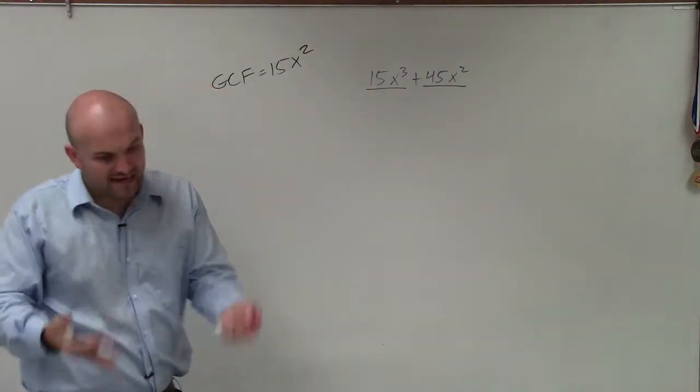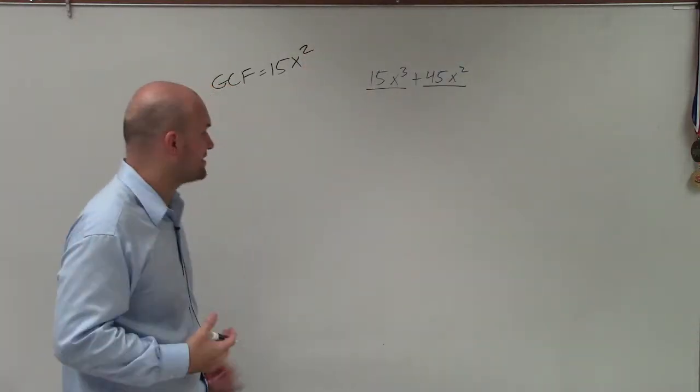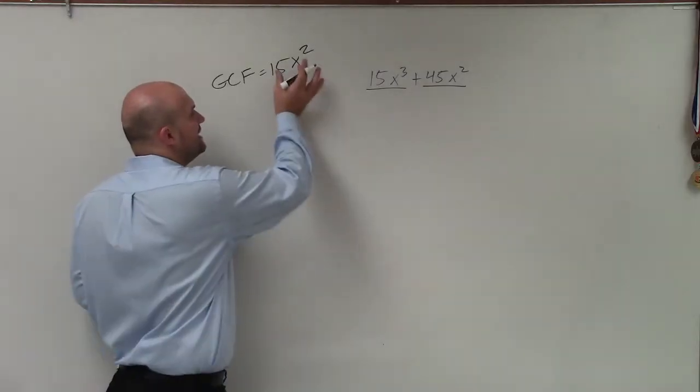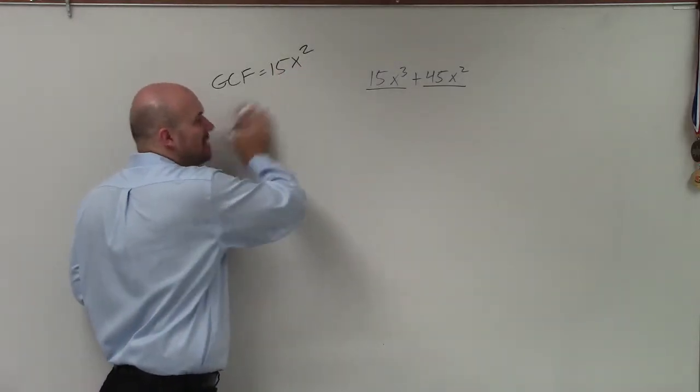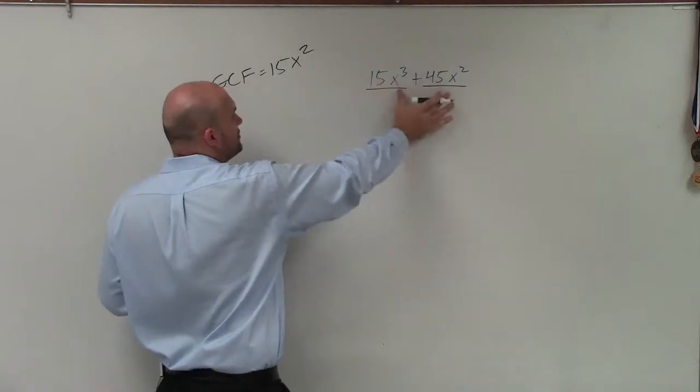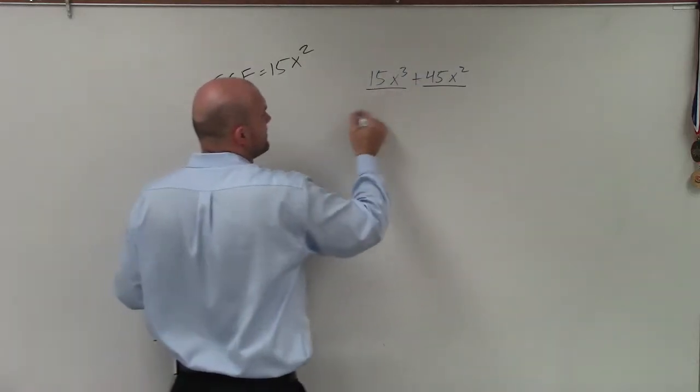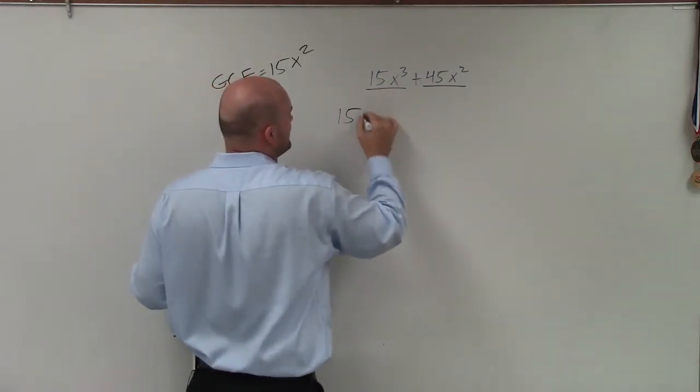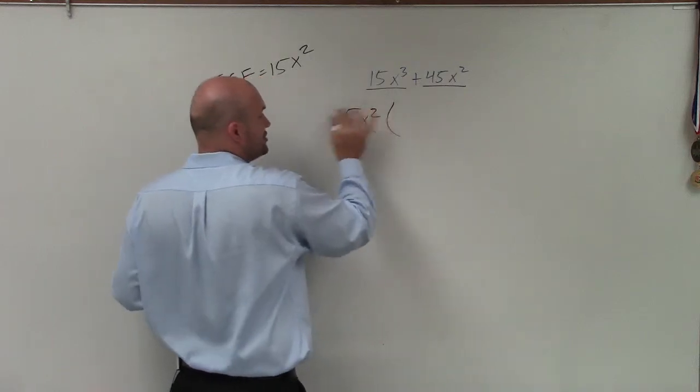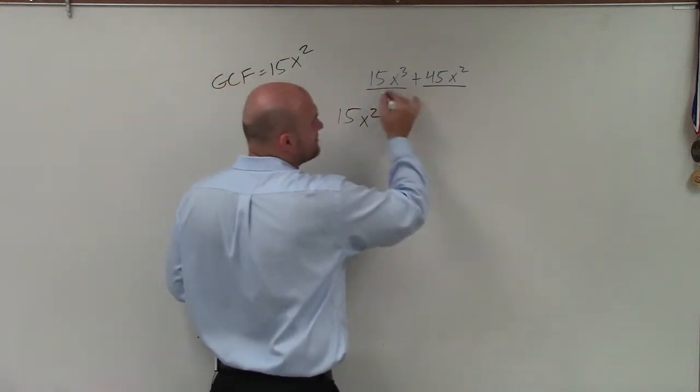So now, when I'm looking into factoring out my greatest common factor, simply what I'm basically doing is dividing out. I'm dividing these two terms, dividing both of these terms by 15 x squared. So when I divide both these terms by 15 x squared, you write your GCF and then the quotient from dividing both of them out.